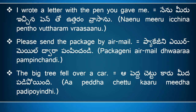'I wrote a letter with the pen you gave me' means 'nenu meeru ichchina pento uttaram vraasanu.' Here, 'I' means 'nenu,' 'wrote' means 'vraasanu,' 'a letter' means 'uttaram,' 'with the pen' means 'pento,' 'you gave me' means 'meeru ichne.' Actually 'you gave me' means 'meeru naku ichcharu,' but in the sentence we say 'meeru ichne pento.' We don't use the meaning of 'me' here. So the full sentence is 'nenu meeru ichchina pento uttaram vraasanu.'